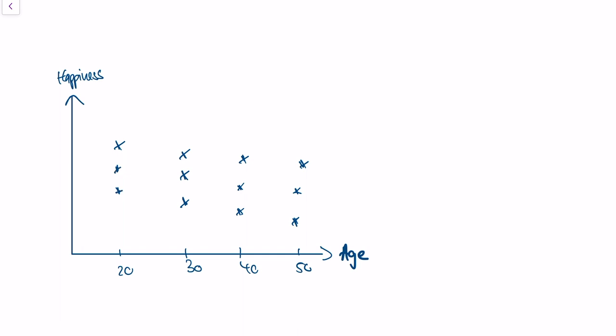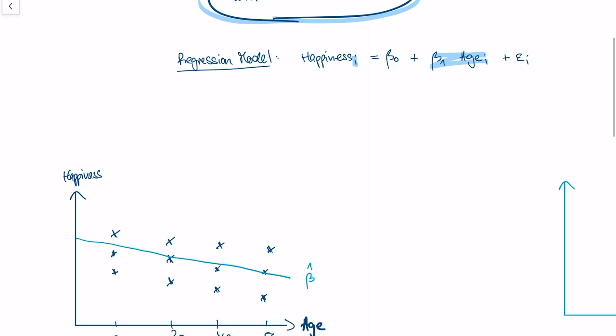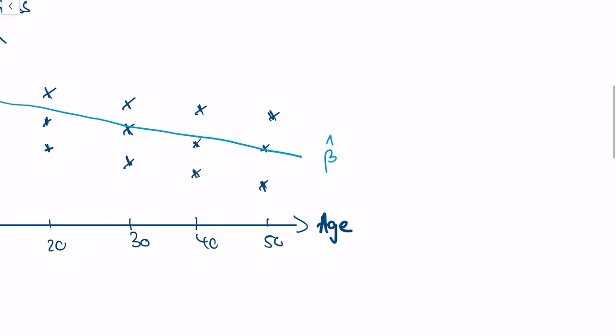So there is kind of a downward sloping trend in our data and this would be our regression line. So our coefficient, beta hat, the influence of age on happiness which we pose in our model, is relevant, is negative.